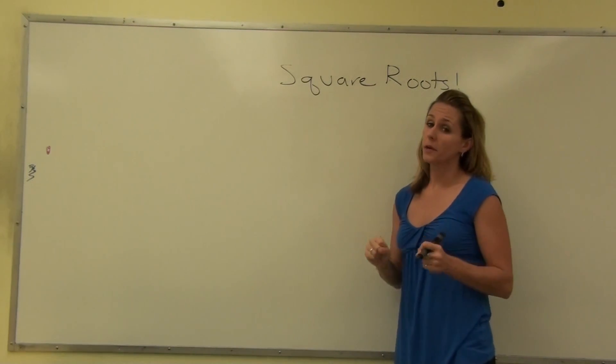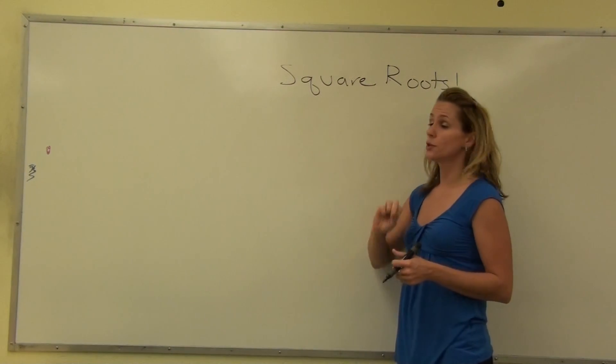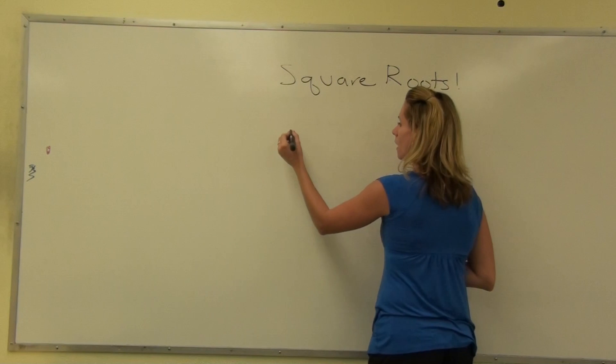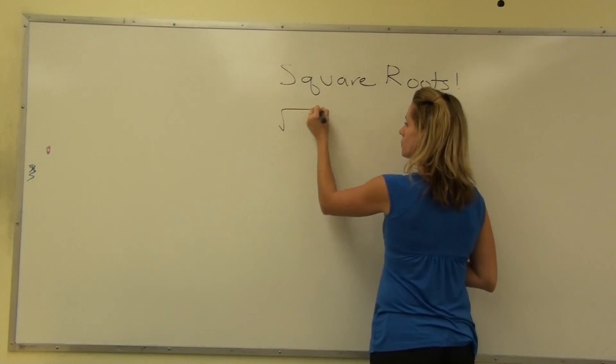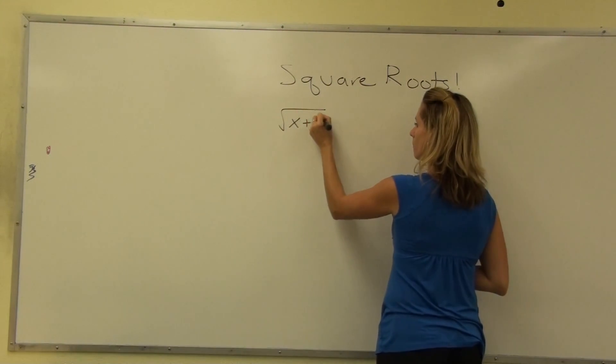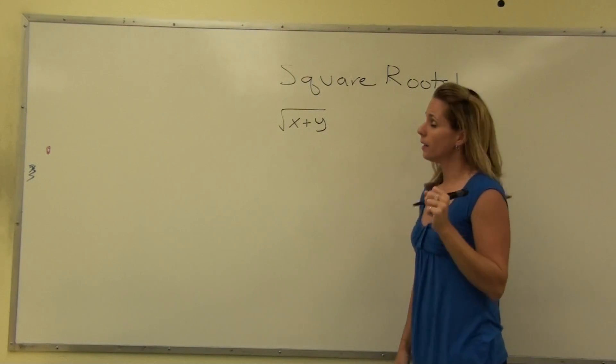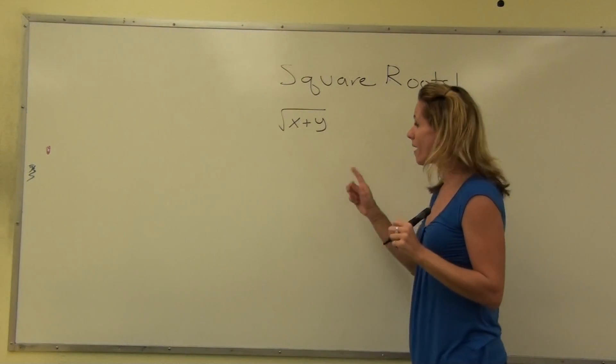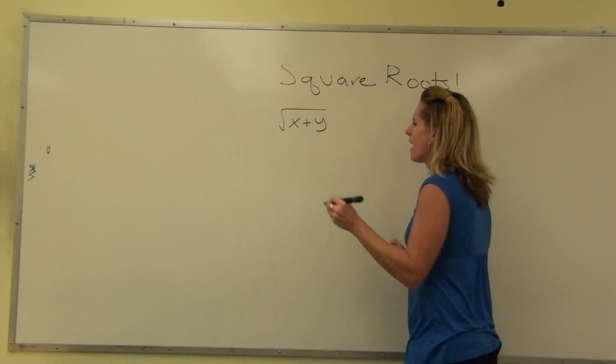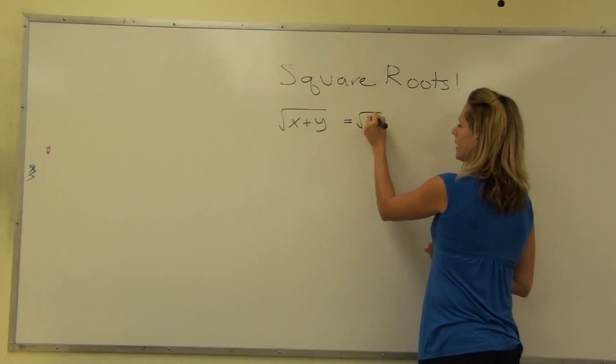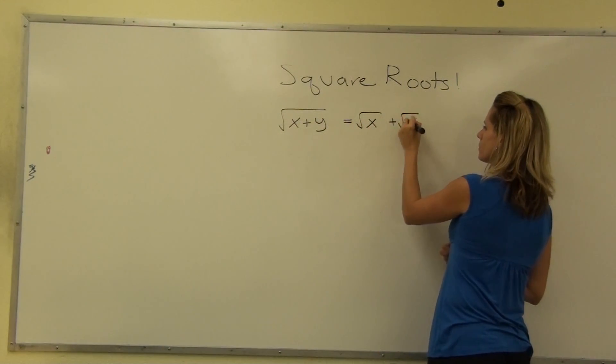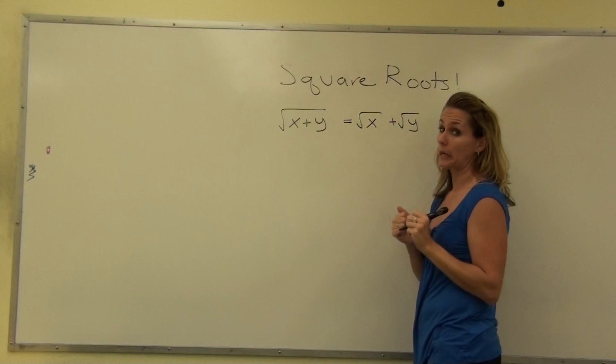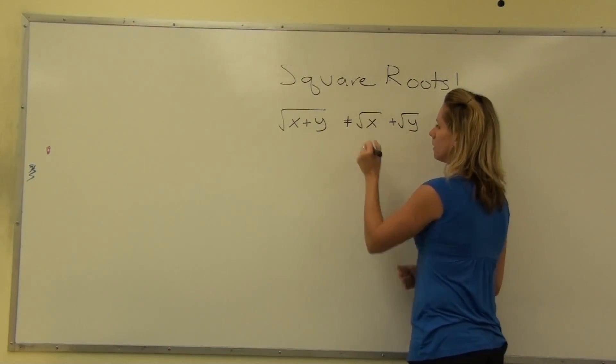We're going to talk about a very common algebra mistake that a lot of students make with square roots. Say you have the square root of x plus y. A lot of students will want to simplify this, and in their head they'll say, I really hope it's the square root of x plus the square root of y. That would be excellent. Unfortunately, not true.